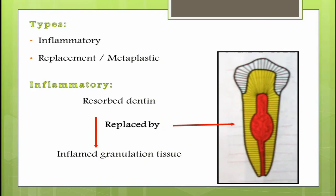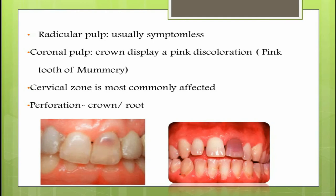There are two types of internal resorption: inflammatory and replacement or metaplastic resorption. In the inflammatory type, the resorbed dentine is replaced by inflamed granulation tissue. If the radicular portion is affected it will usually be asymptomatic, whereas if the coronal portion is affected the crown will display a pink discoloration, seen mostly at the cervical aspect of the tooth. Mostly maxillary anteriors are affected, and sometimes the resorption is so extensive that it results in perforation of the crown or the root.